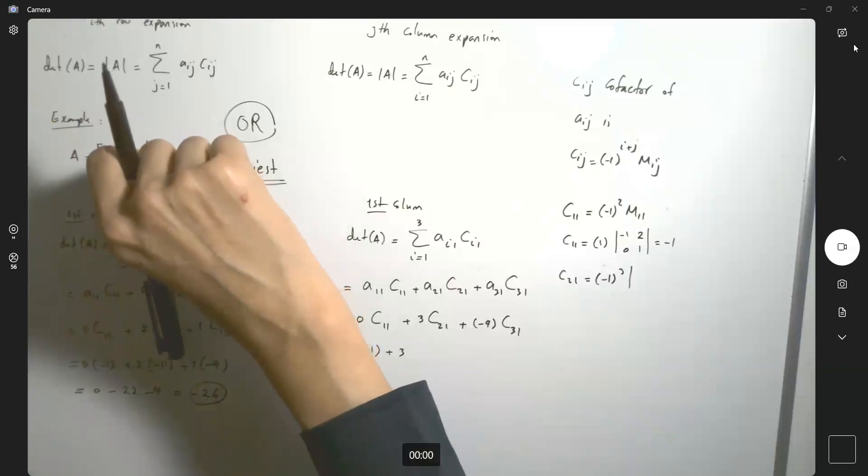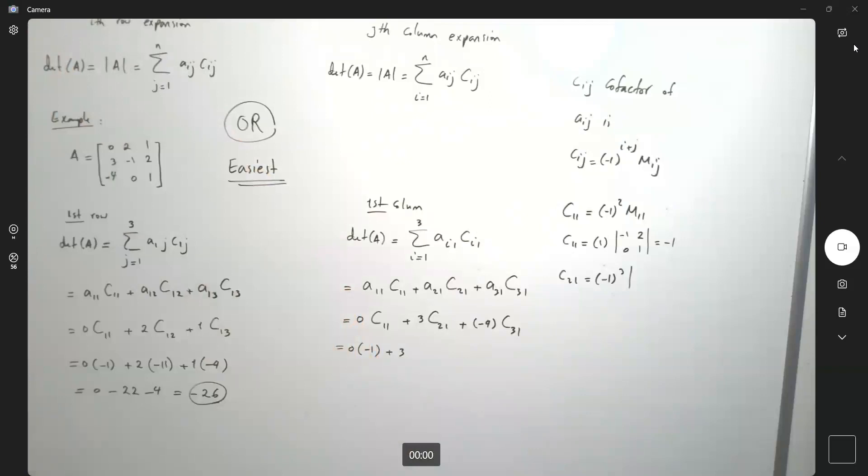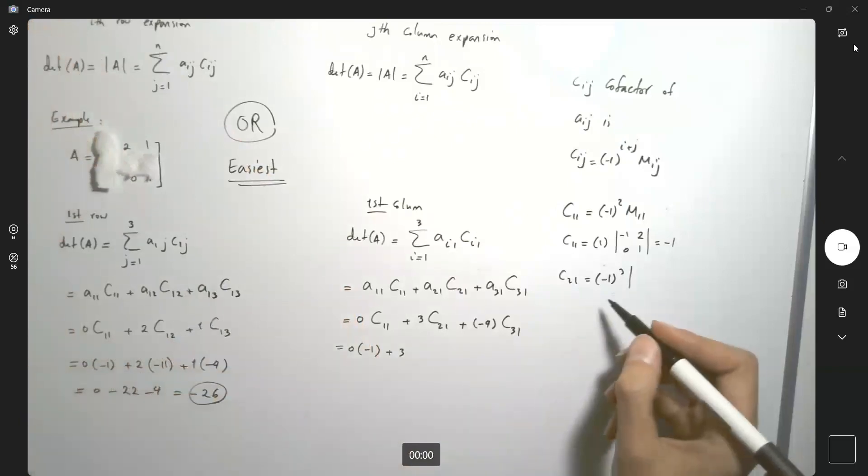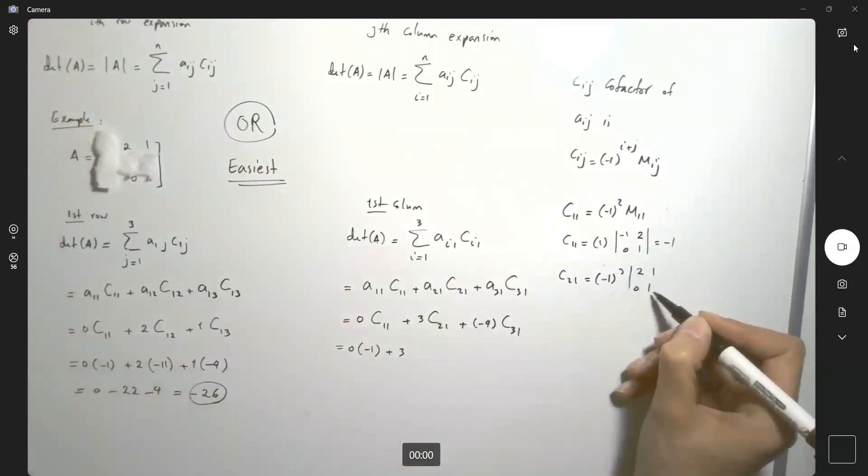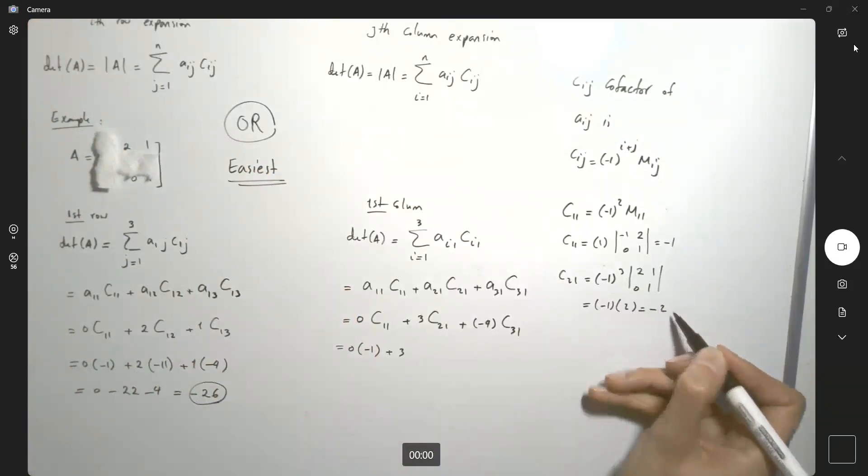M2,1. So you end up with this matrix: 2, 1, 0, 1, which is (-1) times 2, which is -2. Times 3 is -6 plus -4 times C3,1.